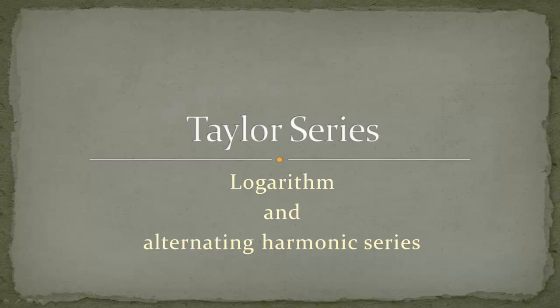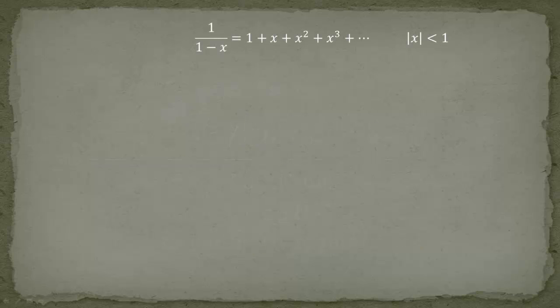I hope to show you some applications of the logarithm when we calculate the alternating harmonic series. We start off again at the geometric series — you might ask why, but you will see shortly that this is really strongly related to the logarithm. The Taylor series of 1 over (1 minus X) is 1 plus X plus X squared plus X cubed and so forth, with the important condition that the magnitude of X should be smaller than 1.